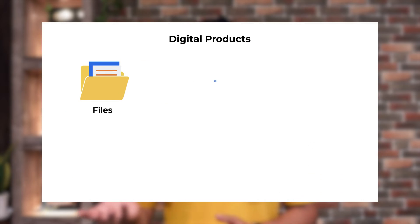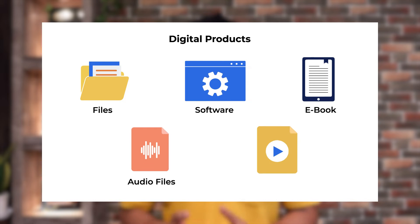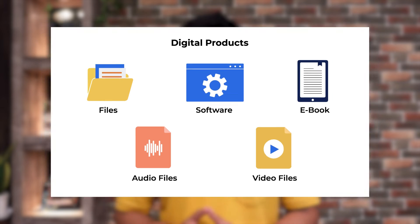Digital products only exist in digital form and can be accessed via digital devices. Digital products include files, software, ebooks, audio files, and video files. If a customer pays for a digital product via PayPal, then the order is fulfilled automatically.